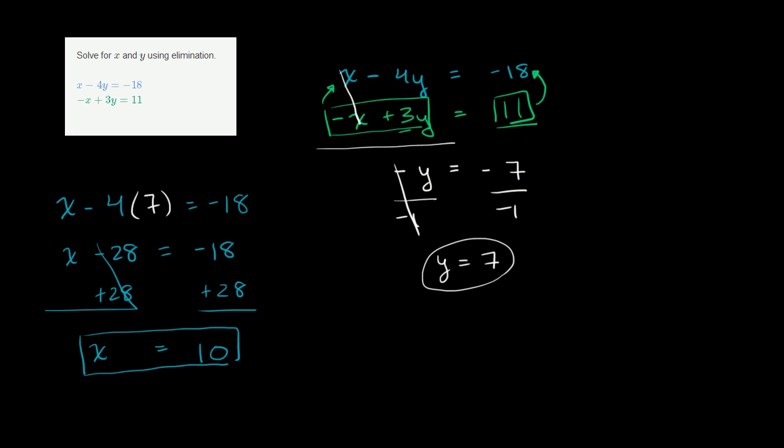And what's really good about this is you can verify them for yourself. If you take this first equation, 10 minus 4 times 7, so 10 minus 28, does indeed equal negative 18. So it checks with the first equation. And let's check the second equation. Negative 10 plus 3 times 7, what does that equal to? That's negative 10 plus 21, which does indeed equal 11. So it satisfies both of them.